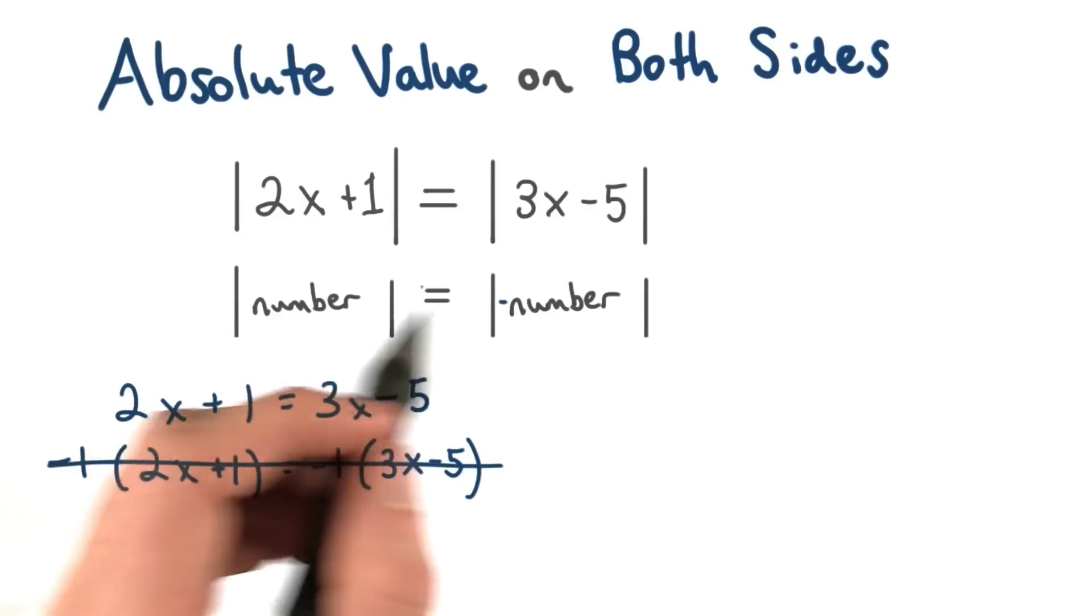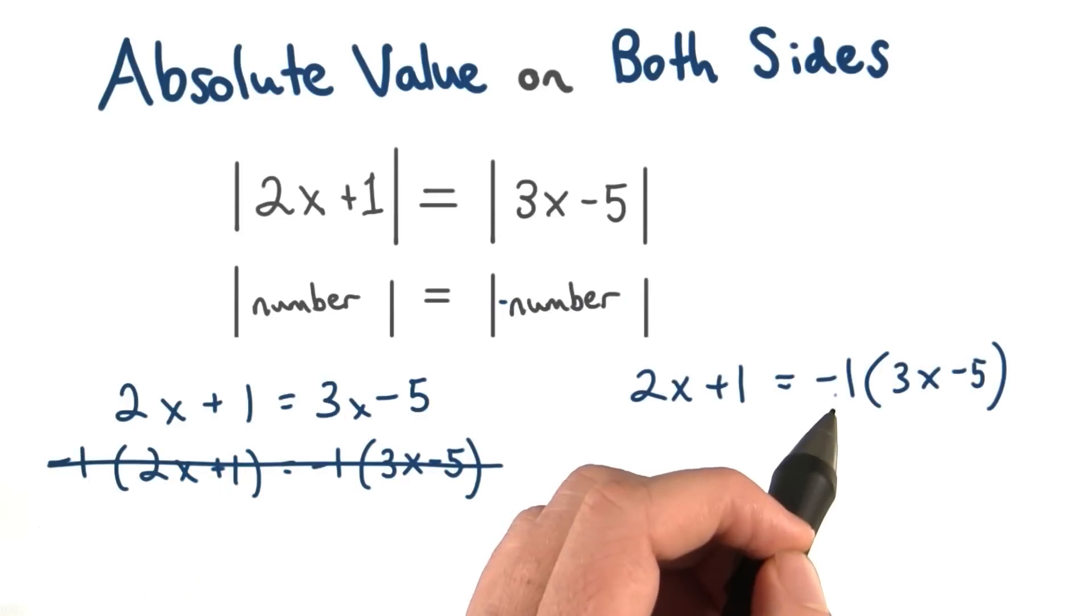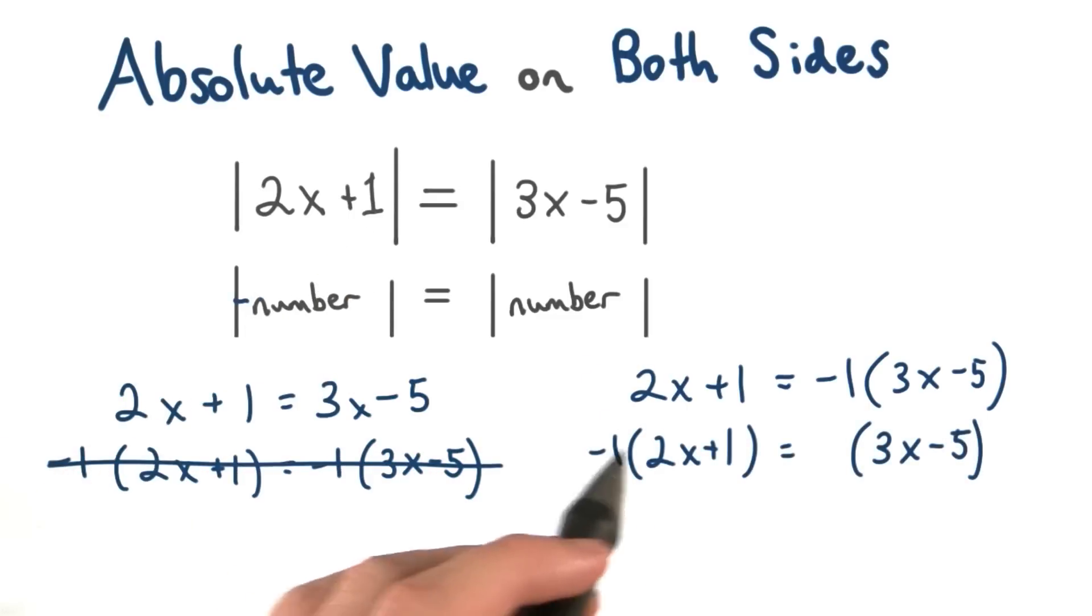The other case we had was a positive number and a negative number. This second number, or this expression, could be negative. Or, we could have had this first number be negative. In that case, this first part would be negative.